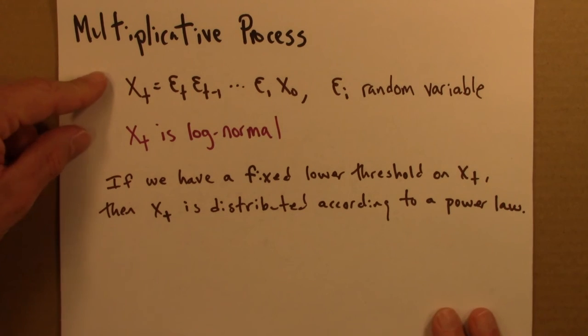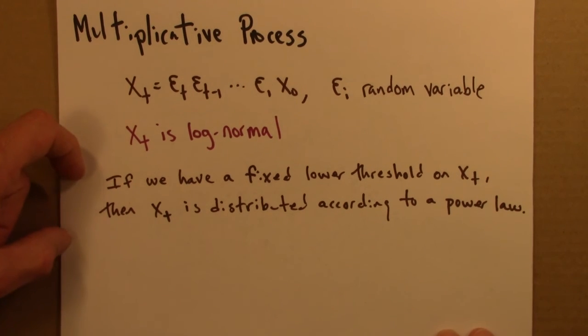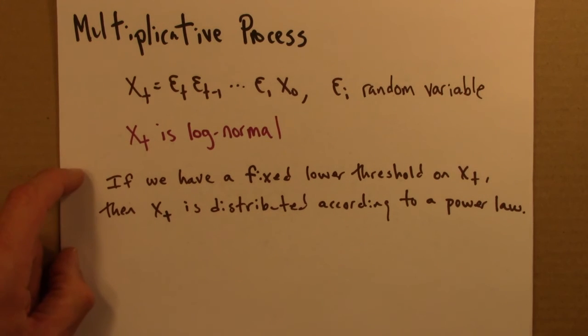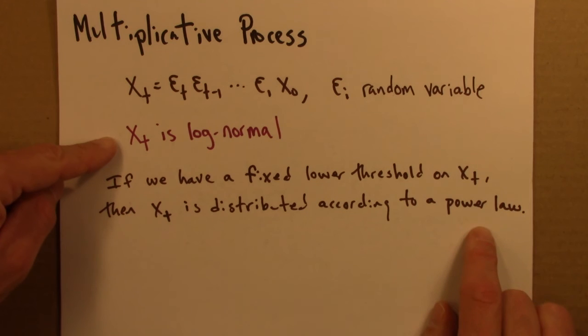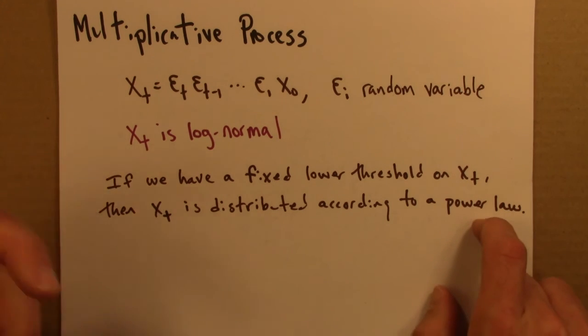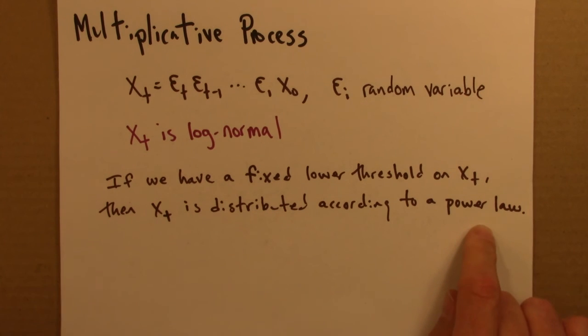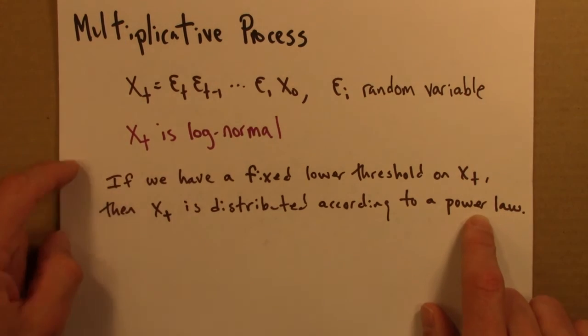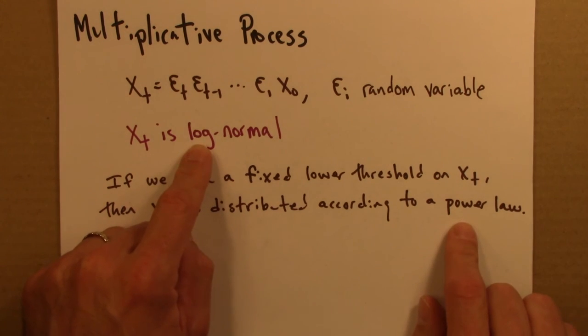I think this is an interesting result because this is really a pretty small change in the basic setup. We have things multiplied together and if we just impose some threshold, we shift from one type of distribution to another, from log-normals to power laws. That tells me that log-normals and power laws are very closely related. Log-normals and power laws both can result, sort of generically, from multiplicative processes. But a small detail in the nature of that process can shift something from log-normal to power law.